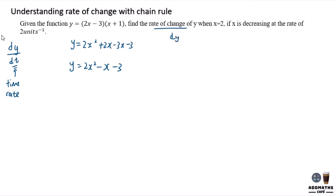You are required to find the rate of change of y, means you are required to find dy/dt. Always analyze the question to find what they want. When x equal to 2, if x is decreasing at the rate of 2, means that dx/dt is negative 2.